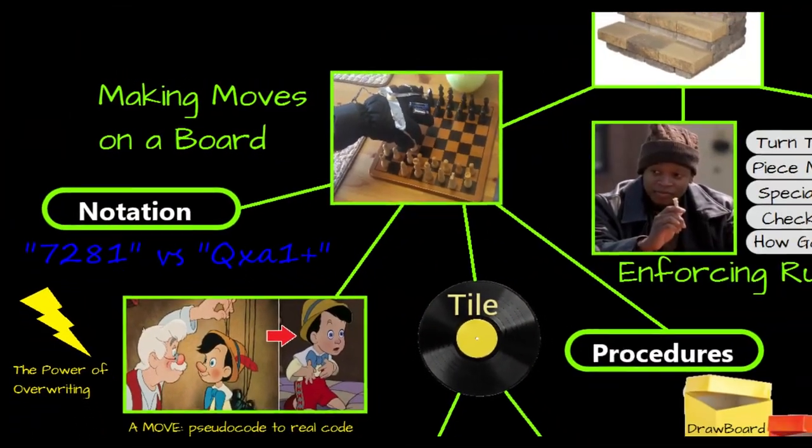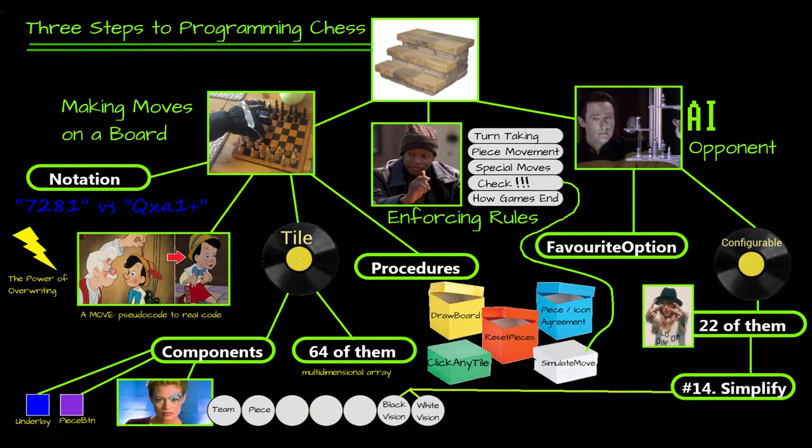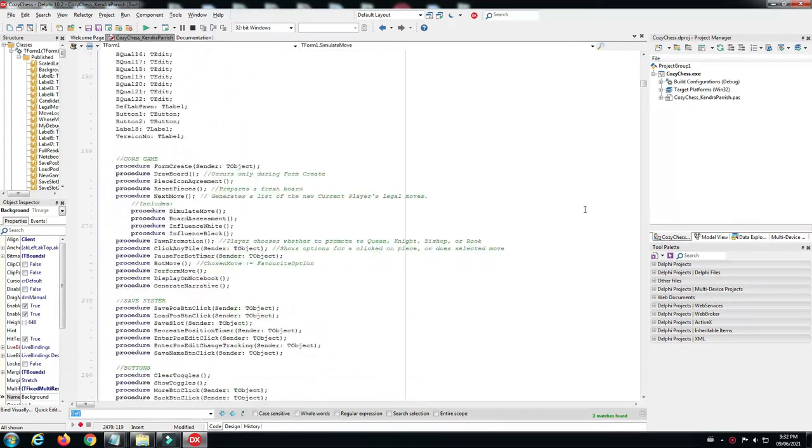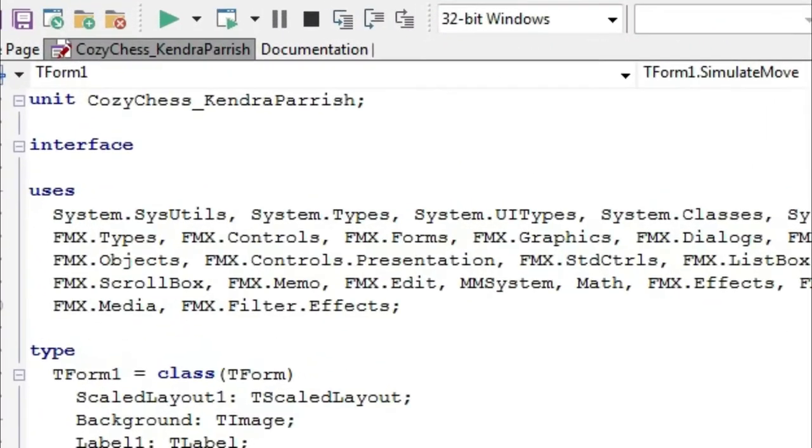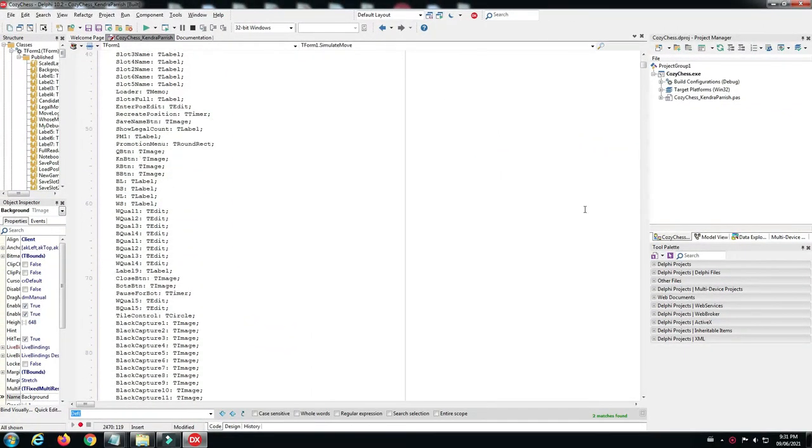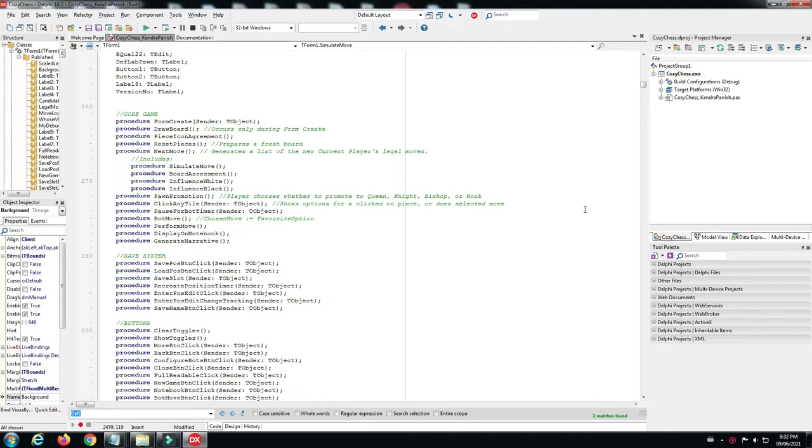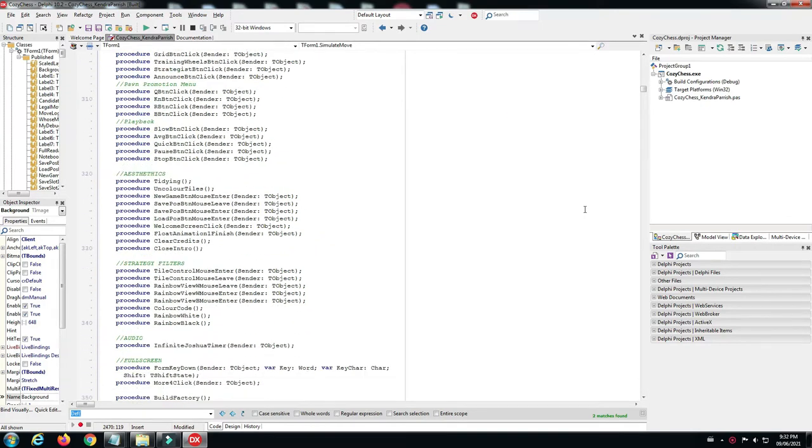Now, dear Kendra of 2006, before we get to the plus sign, we need to go on a long and circuitous journey into the code. But I'll stick this post-it note in the corner of the screen to remind us to come back to it. This is what the entirety of the Cozy Chess code looks like. This is a list of code libraries that was all auto-generated, except I added MM system to play sound effects and math to get random numbers for the AI. This is a list of all the buttons and labels and other objects that appear on screen. That was all auto-generated, too. This is a list of all the game's procedures.